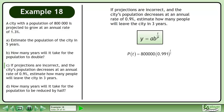The function is p of t equals 800,000 times 0.991 raised to the power of t over 1, where p represents the population and t is the time in years.